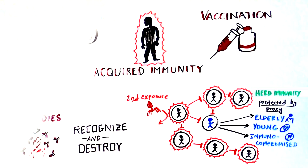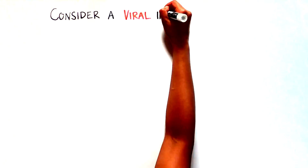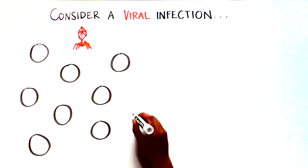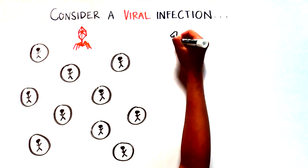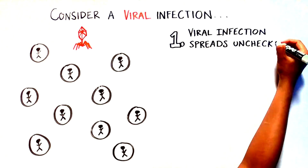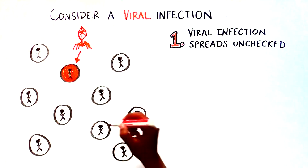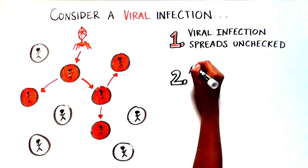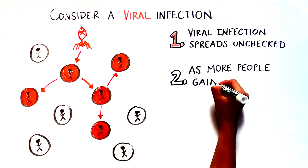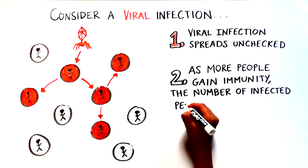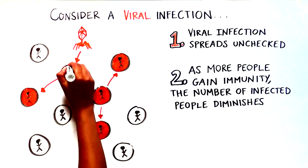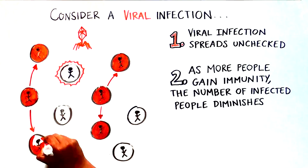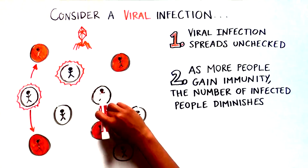Let's take a look at this idea visually, considering a viral infection. When a new virus enters a population with no immunity, it can spread unchecked because the people in that population don't have the protective antibodies. As more people gain immunity, the number of infected individuals diminishes. This decreases the likelihood that an infected person will transmit the disease to someone susceptible.